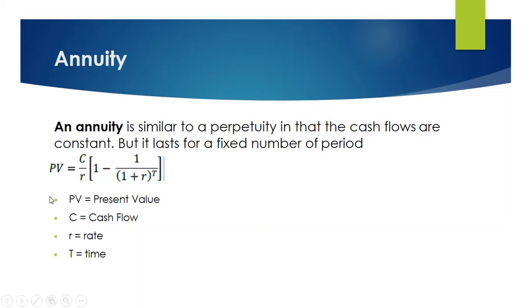Here is the formula of annuity. PV indicates present value, C is the cash flow, R indicates discount rate and T is the time.